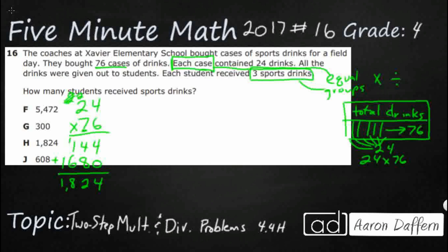That gives us 1,824 — but that's not the final answer, we cannot get ahead of ourselves. Remember, this is the total number of drinks. We know that we have 1,824 drinks because we have 76 cases and each case has 24 drinks. Now we're trying to figure out how many students received drinks, not how many drinks there are altogether. Each student received three sports drinks.